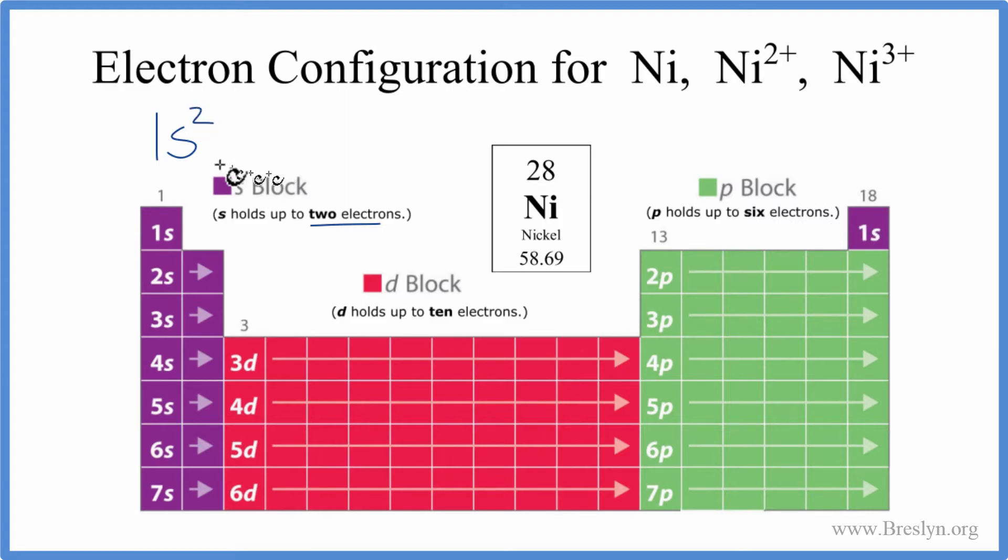And then we go to 2s: 2s¹, 2s². We've used 4 electrons; we have 28. After the 2s we go over here to the 2p. The p's can hold up to 6, so we'll put 6 in there. We've used 10 electrons. Then 3s², 3p⁶.